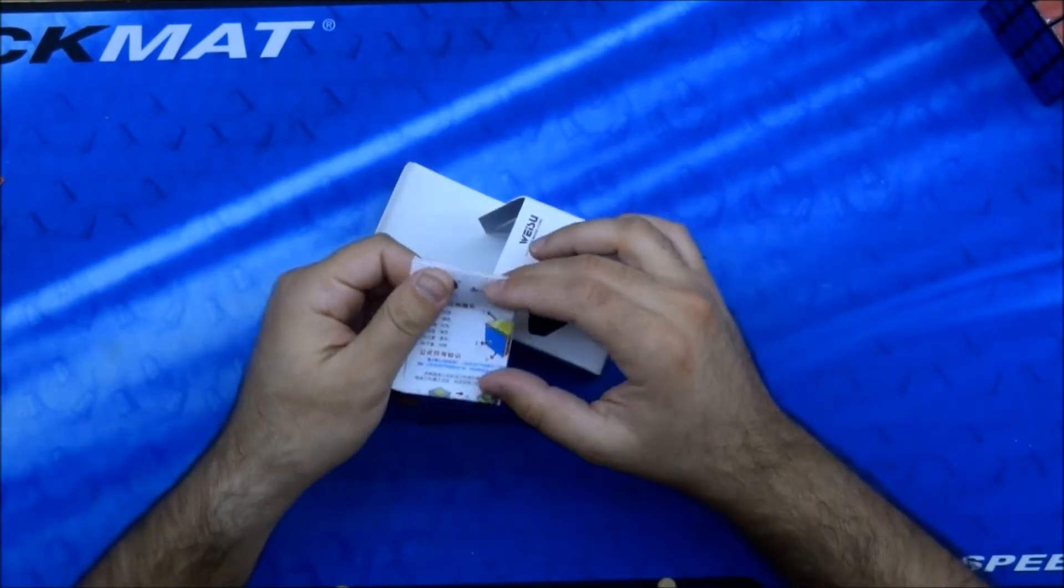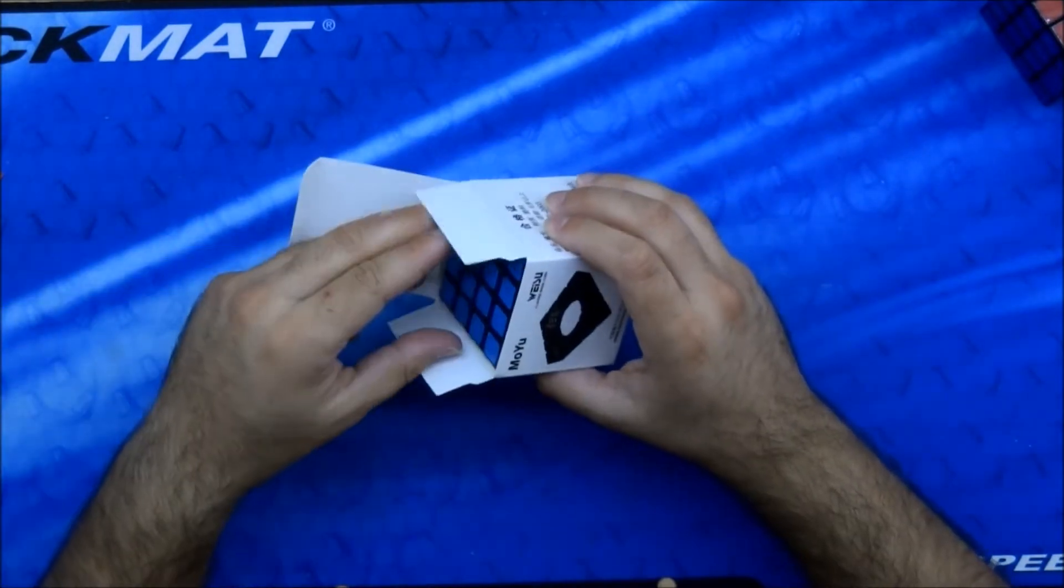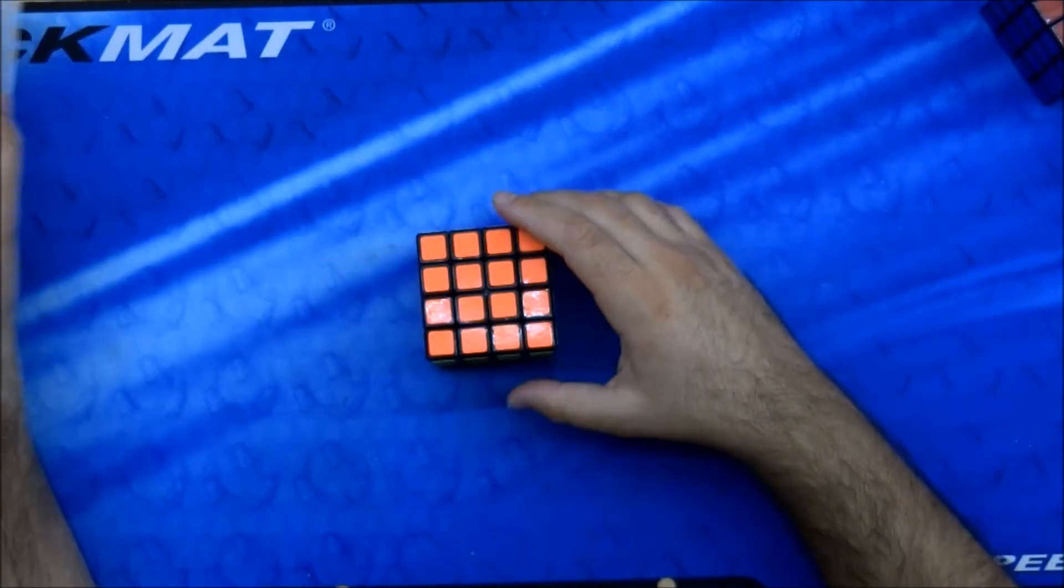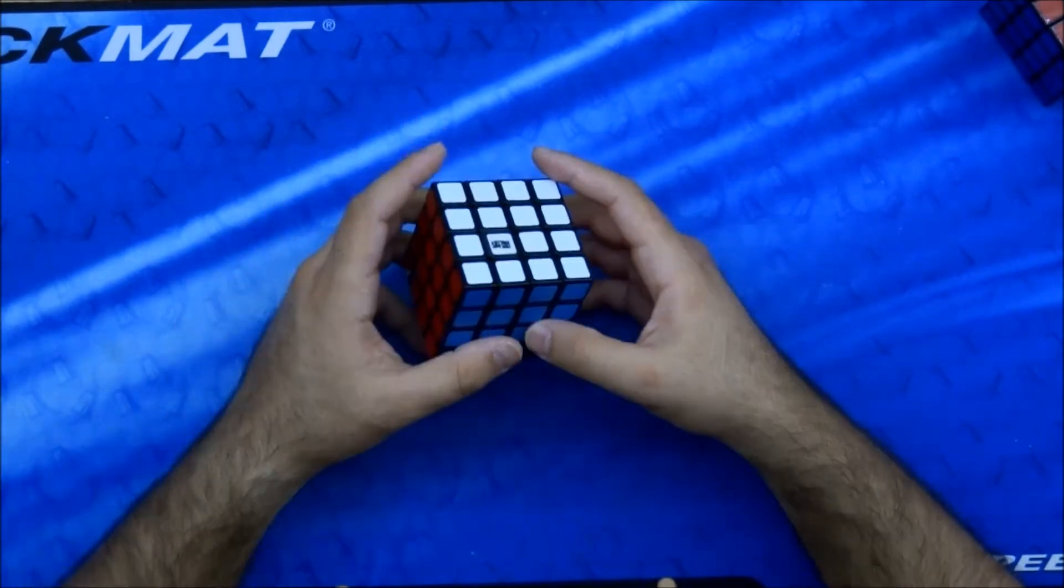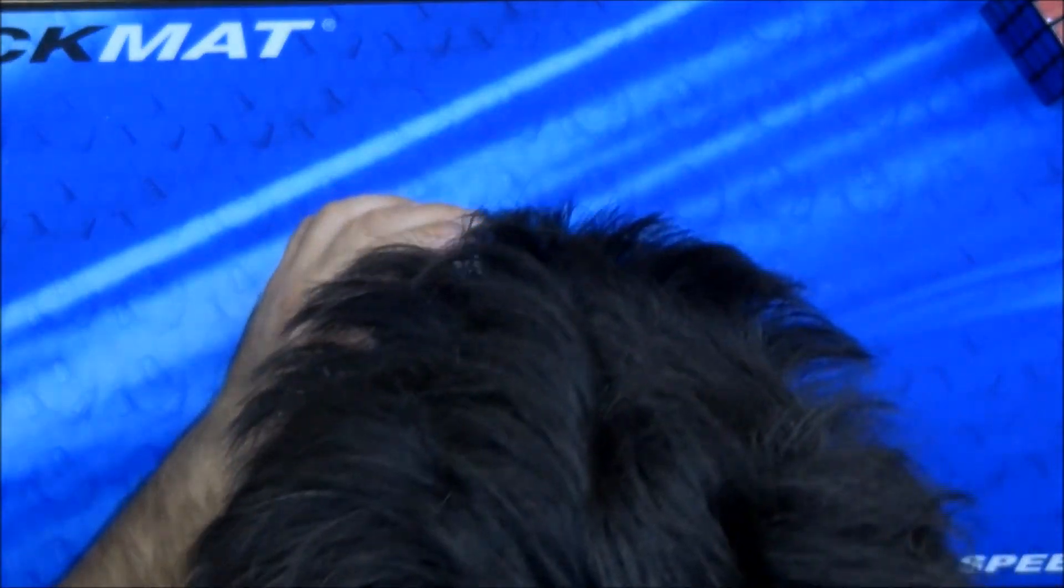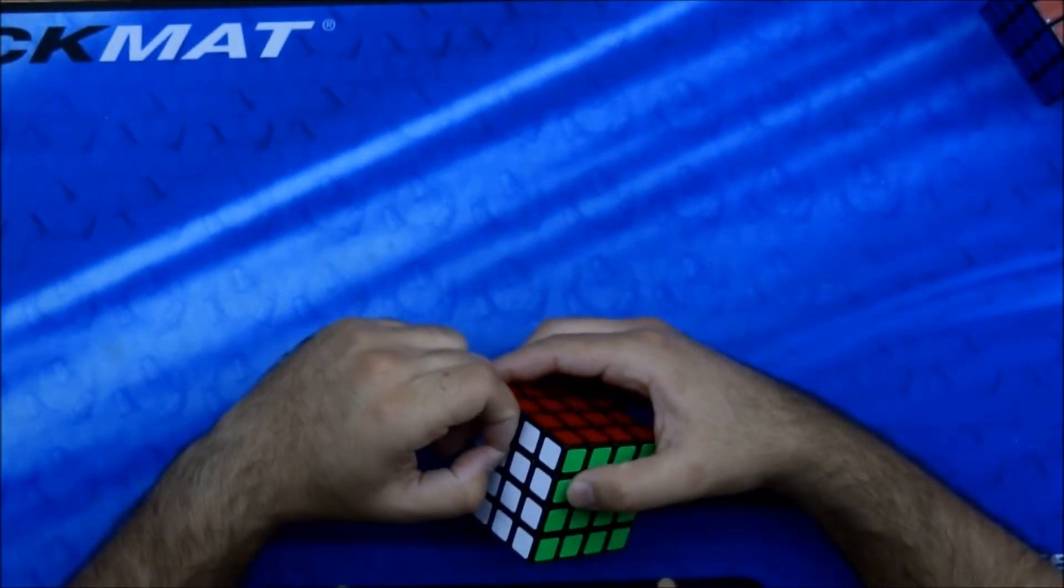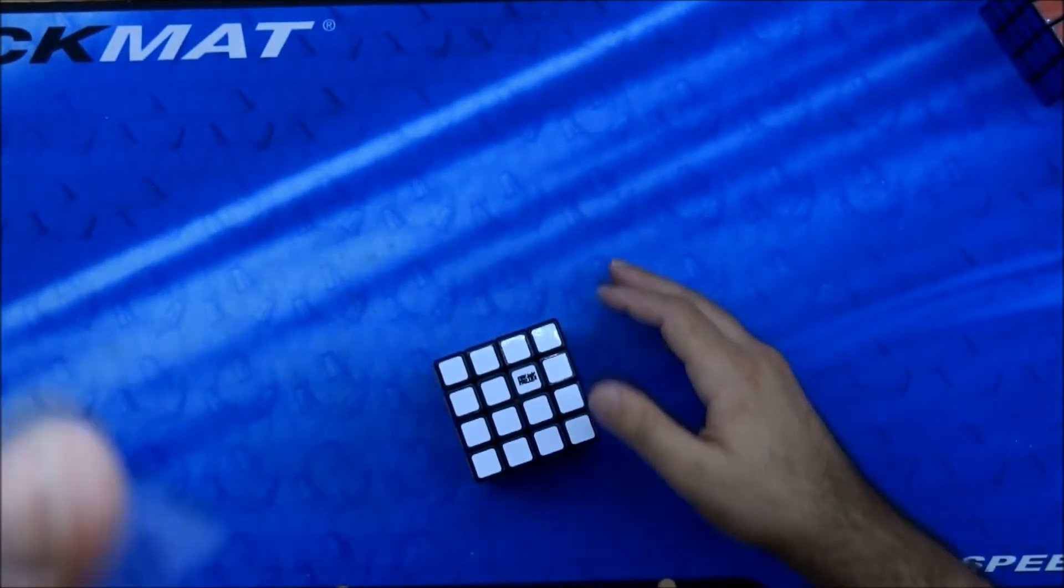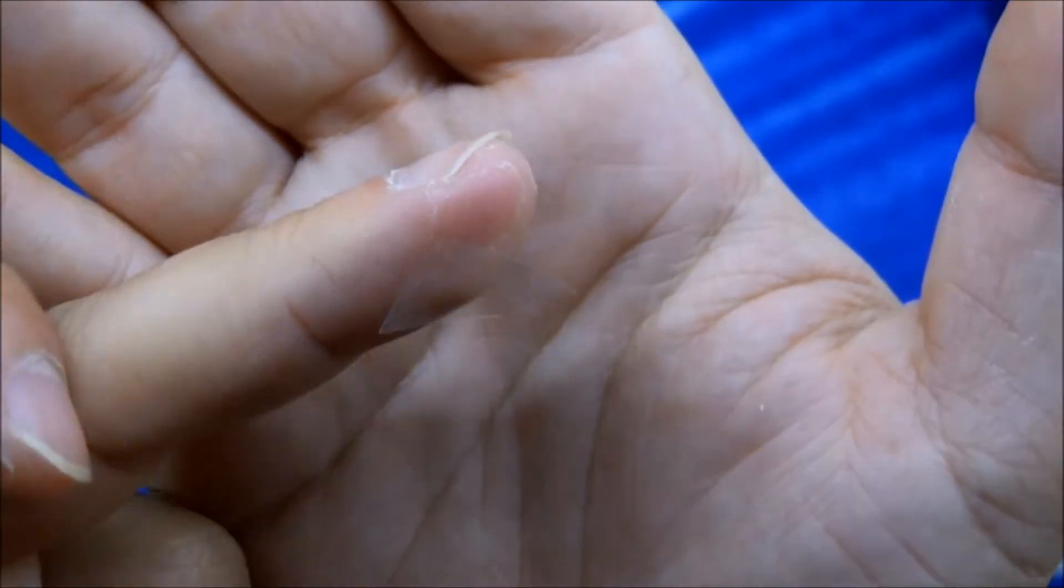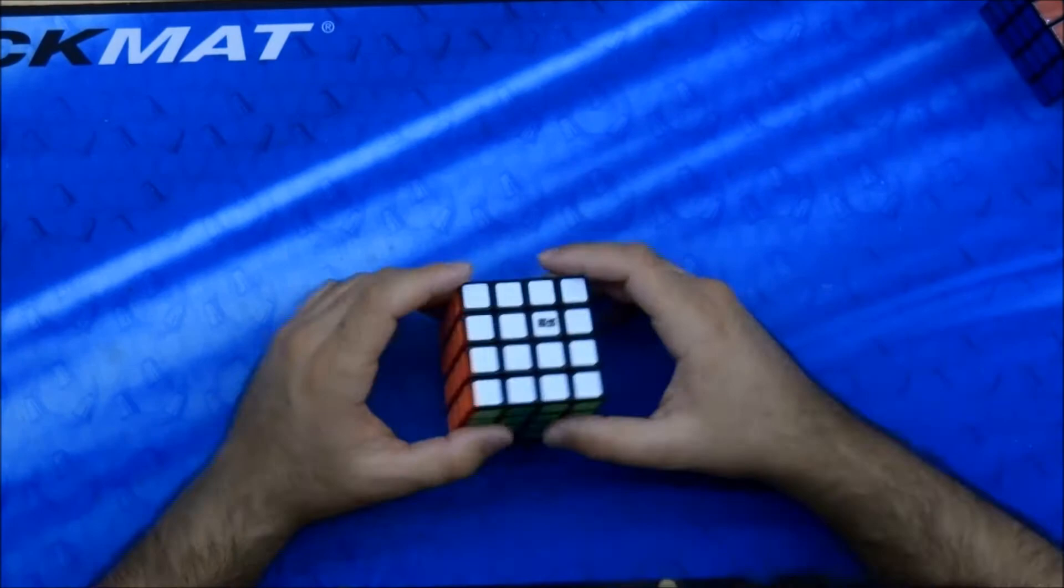So inside, some Chinese instructions how to solve it, don't really care. And the cube itself. Okay, let's start with basics. I apologize ahead, I have a new cat and he talks a lot. There was like a little protective film for the logo, took it off. So the logo will stay in shipment, I guess.